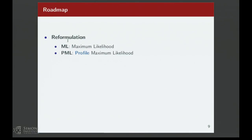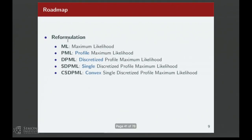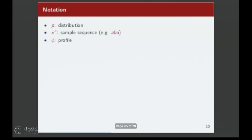Now let me tell you how we actually do it. We're going to define a discretized version of the problem, then a slight variant, then take a convex relaxation — that gives our algorithm. We take our original problem and massage it in a few different ways to convert it into something we can actually solve. We have our distribution, our sequence of samples, our profile, the sequence probability, and the profile probability — the objective function we want to approximate.